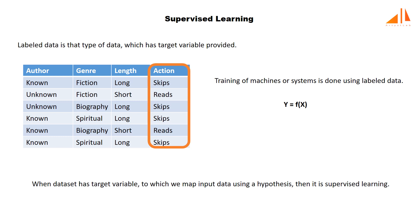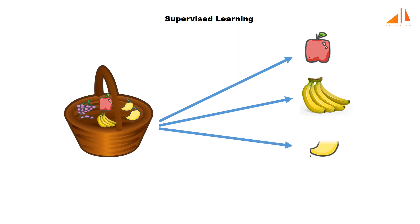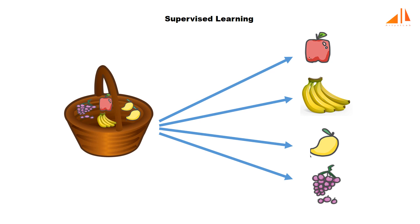Let us understand it with the help of an example. Suppose there is a basket filled with some fruits and your job is to arrange the same type of fruits in one place. Assume the fruits are apple, banana, mango, and grapes. You find it very easy — it is easy if you already know from previous experience which category a particular fruit belongs to. Here the previous experience is called training data in data mining terminology. The supervised learning model learns from training data because it has a target variable which says that if some fruit has certain features, it can be a banana, and similarly for other fruits.